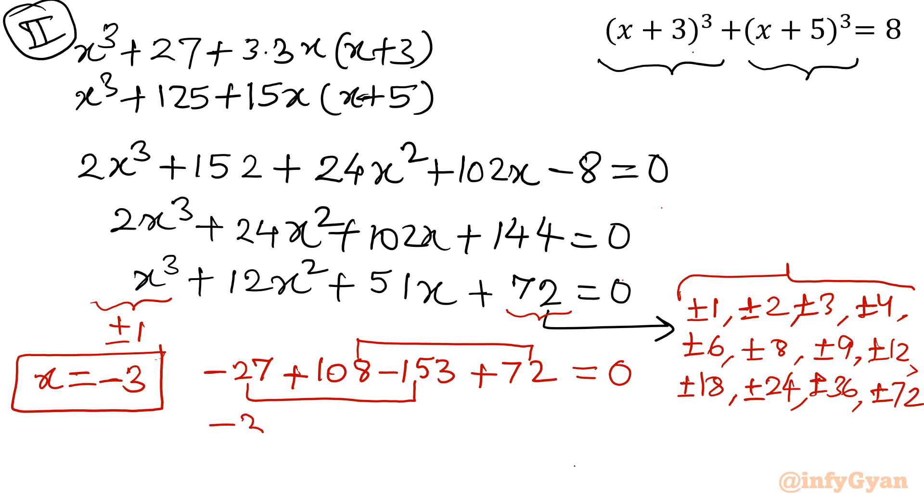Again, I will do the remainder theorem. So I will write minus 3. The coefficients of cubic equation 1, 12, 51, 72. So leading coefficient as it is, I will write 1. Then minus 3 times 1, minus 3, 9, minus 27, 24, minus 72, 0.